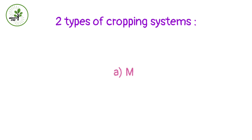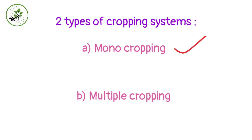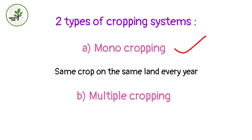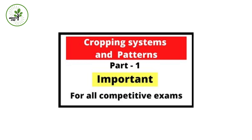The two basic types of cropping systems are monocropping and multiple cropping. Monocropping is raising the same crop on the same land every year. Multiple cropping is growing two or more crops on the same field in a year — it is known as intensification of cropping in time or space, meaning more crops within a year or on the same piece of land. The different multiple cropping systems include intercropping, which we discussed in the previous video.